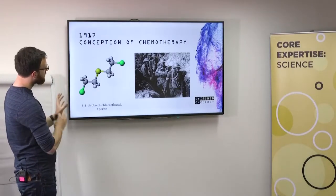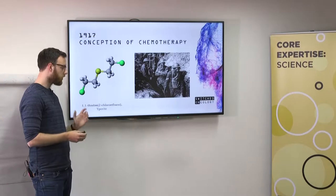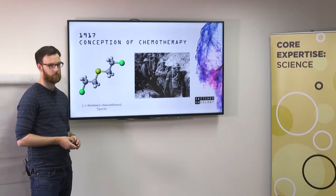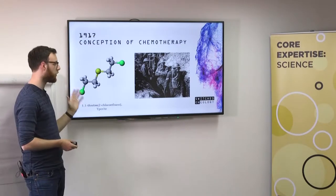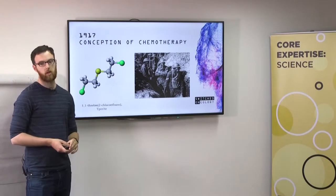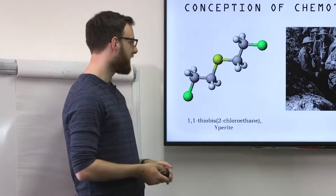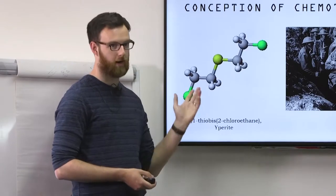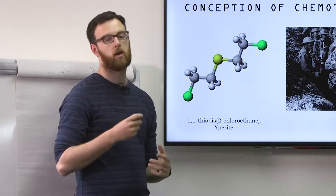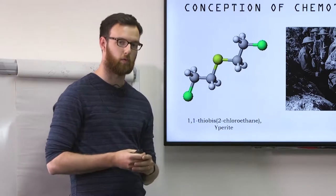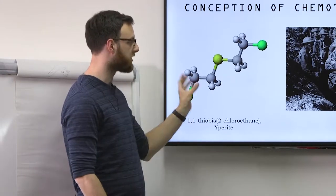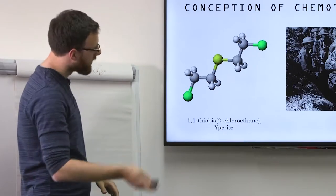There's a really interesting period of history here where the American government warfare department realized this was a powerful weapon and needed an antidote. They discovered something called nitrogen mustard. You take the sulfur atom out of the molecule, replace it with nitrogen. You still have a toxic compound, but one that's able to help with some of the worst effects of this drug.